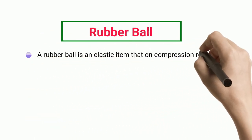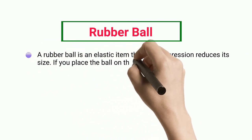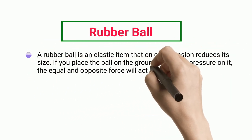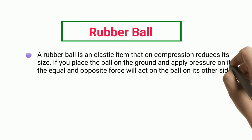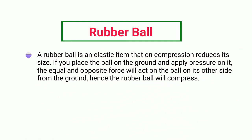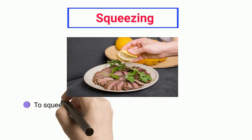Rubber ball: a rubber ball is an elastic item that on compression reduces its size. If you place the ball on the ground and apply pressure, an equal and opposite force acts from the ground on the other side, causing the rubber ball to compress.